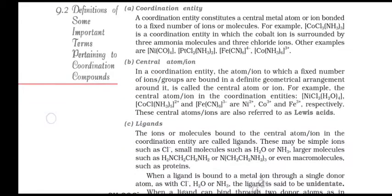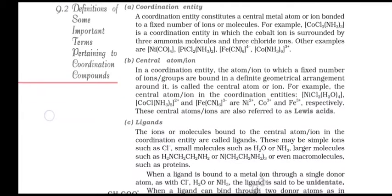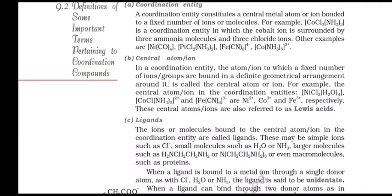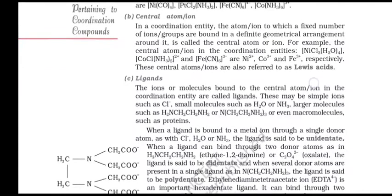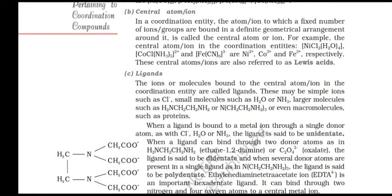Coordination Entity: A coordination entity constitutes a central metal atom or ion bonded to a fixed number of ions or molecules. For example, [CoCl3(NH3)3] is a coordination entity in which the cobalt ion is surrounded by three ammonia molecules and three chloride ions. Central Atom or Ion: In a coordination entity, the atom or ion to which a fixed number of ions or groups are bound in a definite geometrical arrangement is called the central atom or ion. For example, the central atom or ion in [NiCl2(H2O)4] and [Fe(CN)6]3- are Ni2+ and Fe3+ respectively. These central atoms are also referred to as Lewis acids.